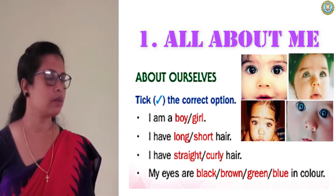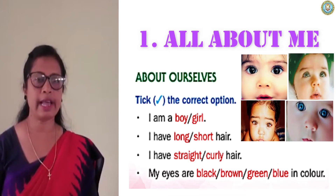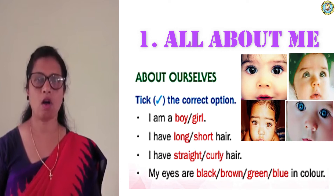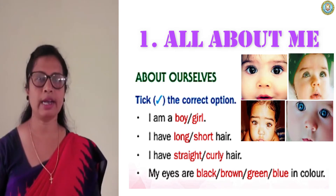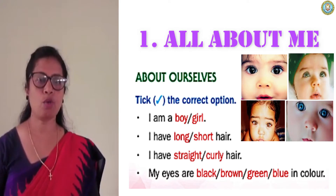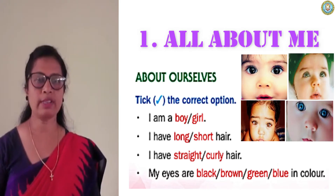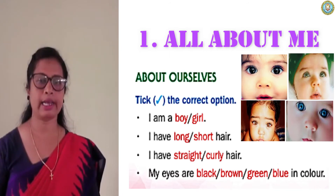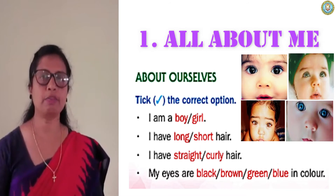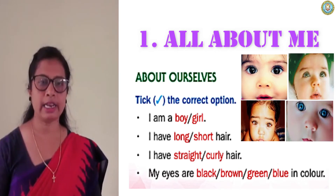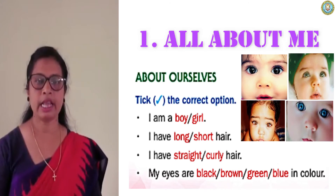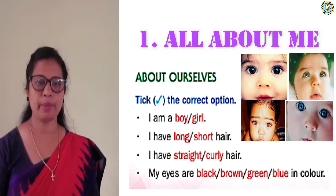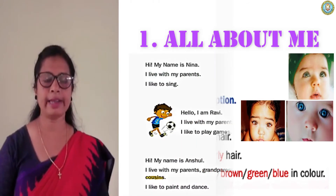Now look at question number four: My eyes are black, brown, green, or blue in color. There are four colors. What is the color of your eyes? If you have black eyes, tick 'black'. If brown, tick 'brown'. If green, tick 'green'. If blue, tick 'blue'.